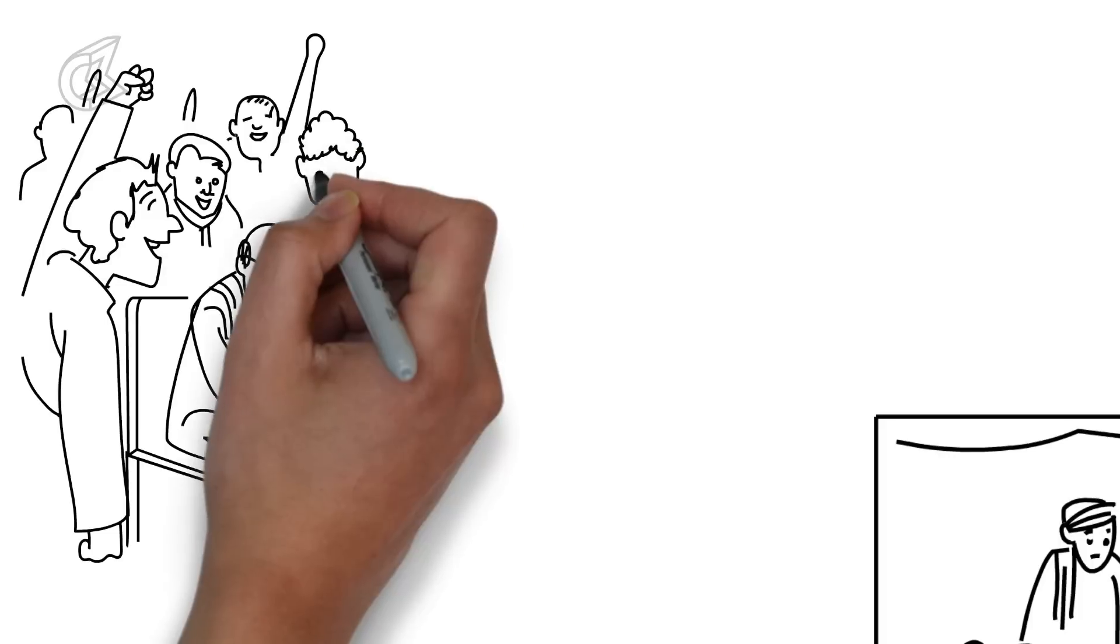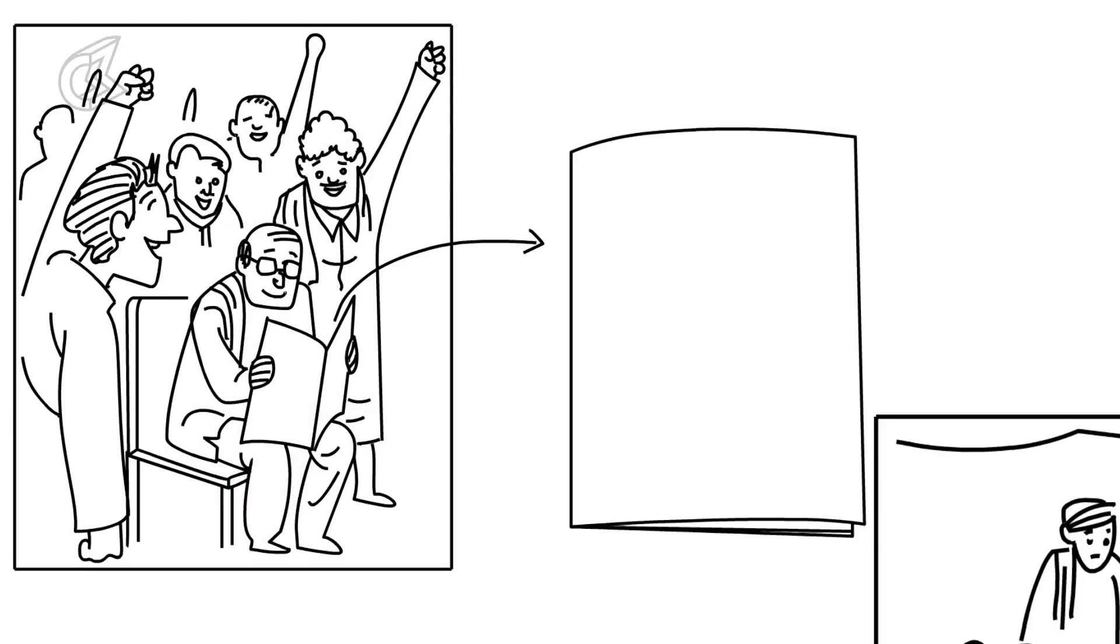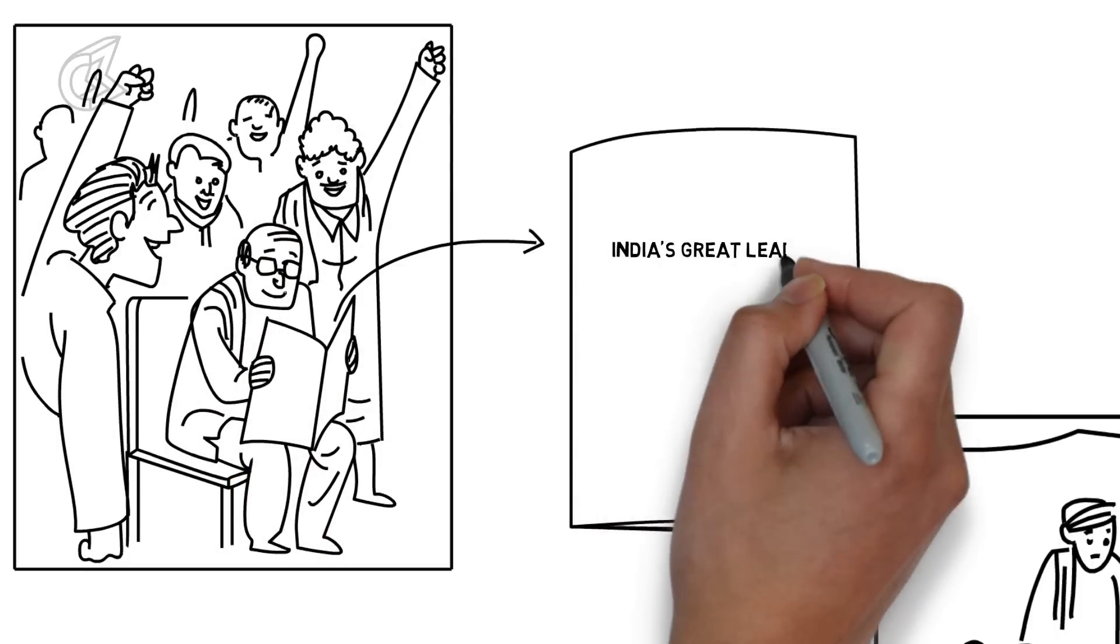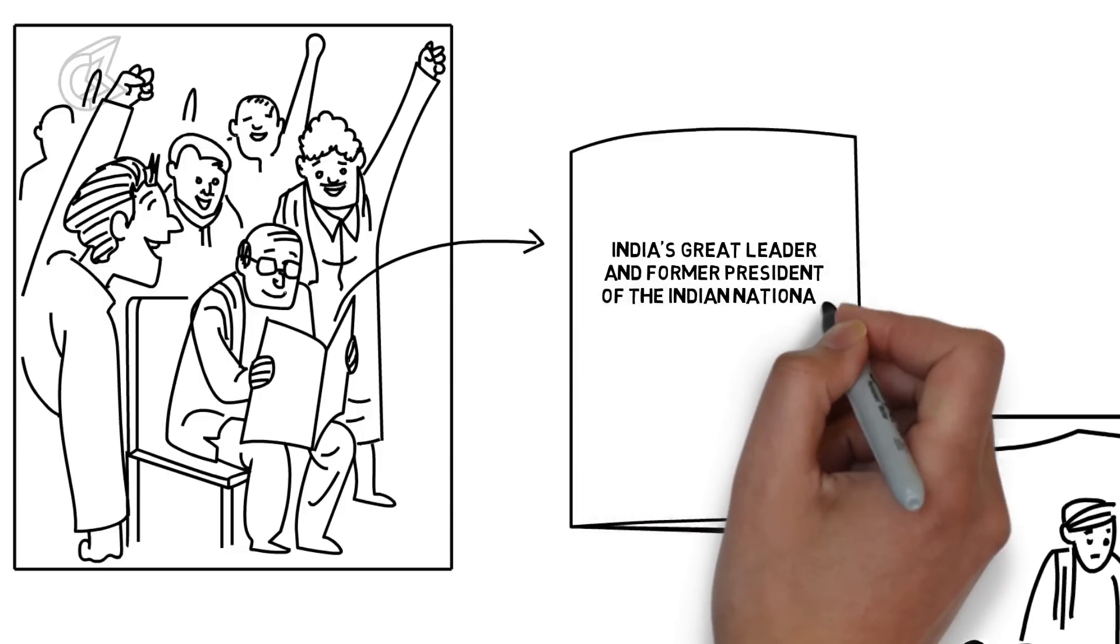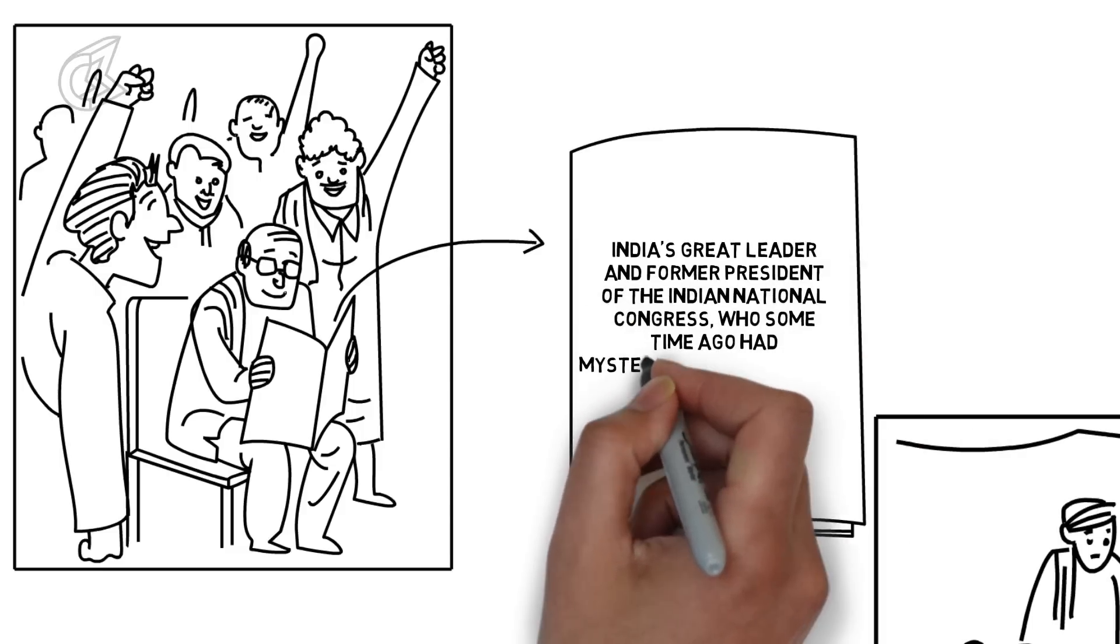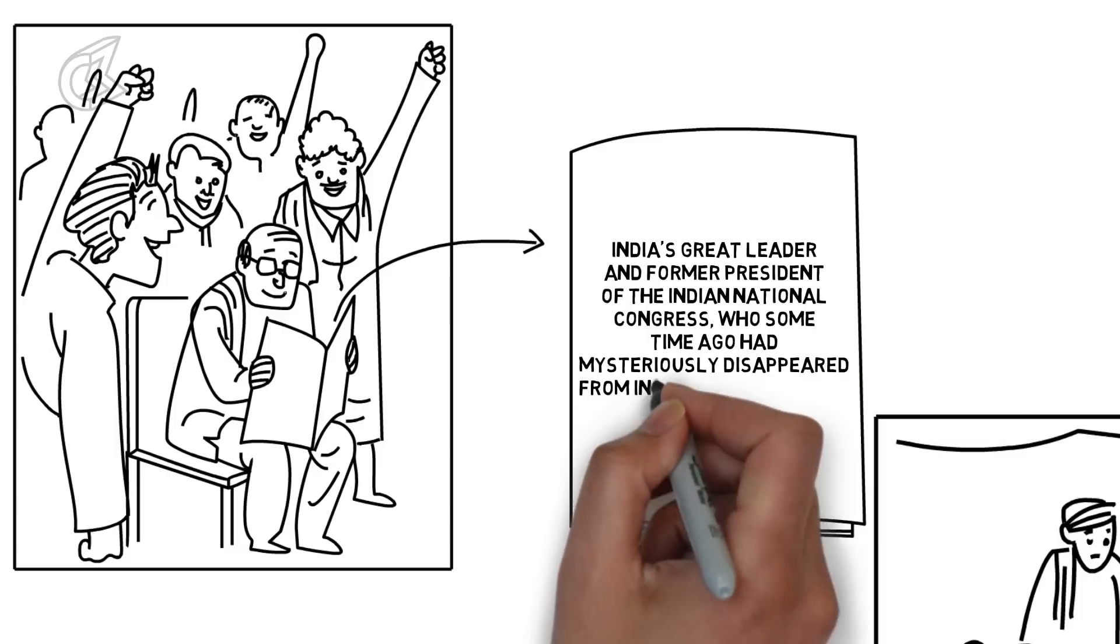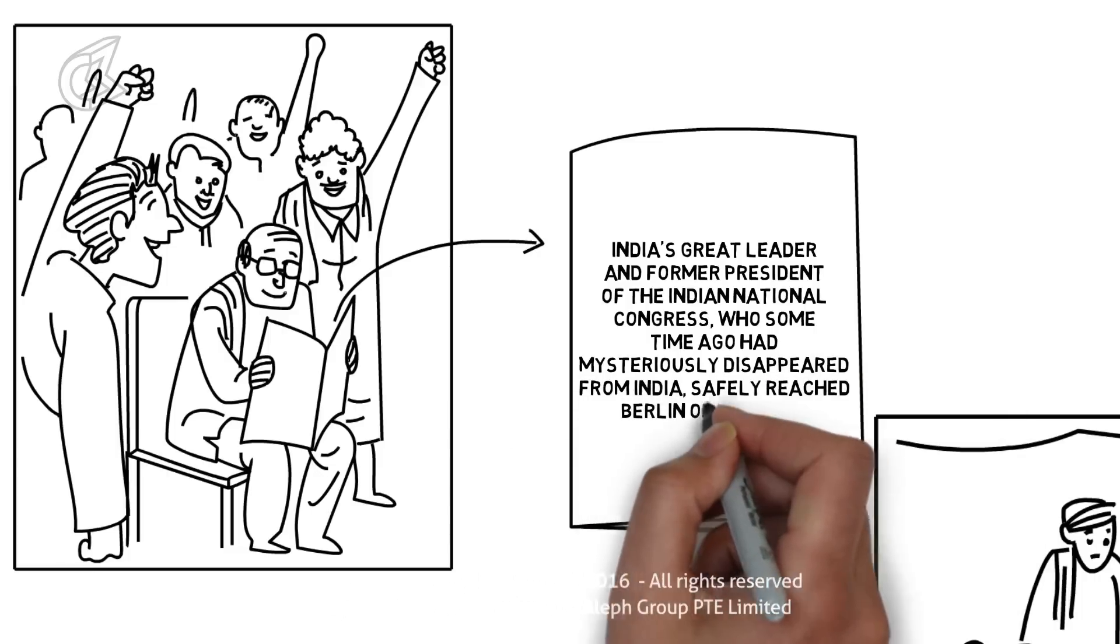A German magazine carrying a picture of Netaji with the caption, India's great leader and former president of the Indian National Congress, who some time ago had mysteriously disappeared from India, safely reached Berlin on March 28.